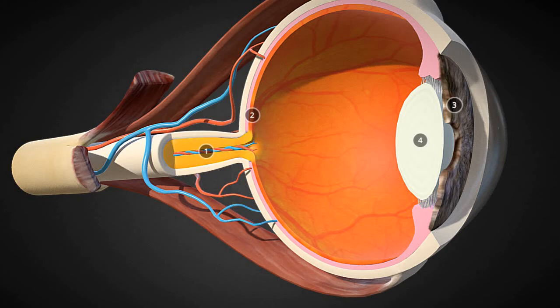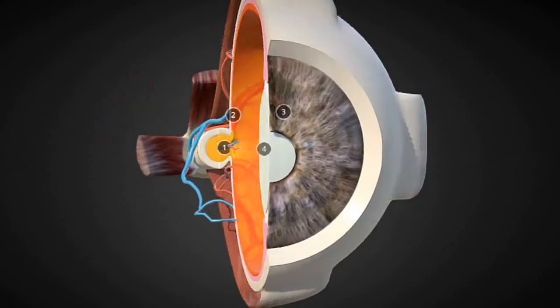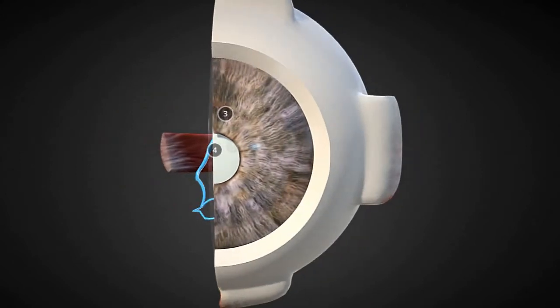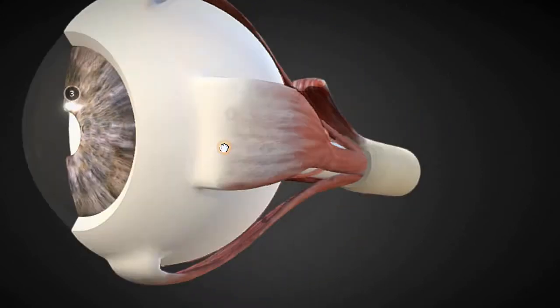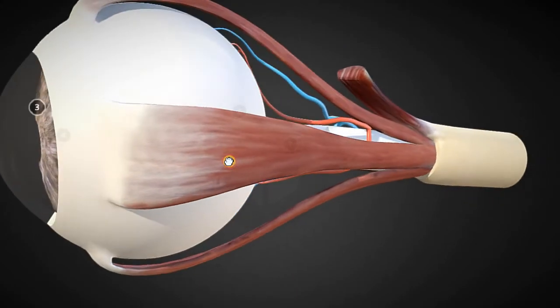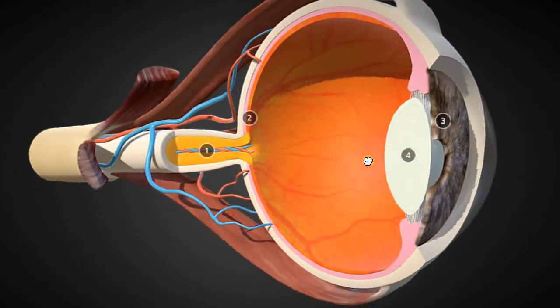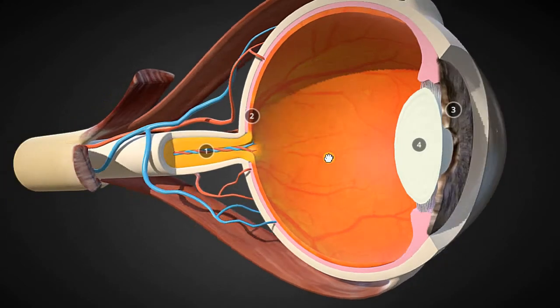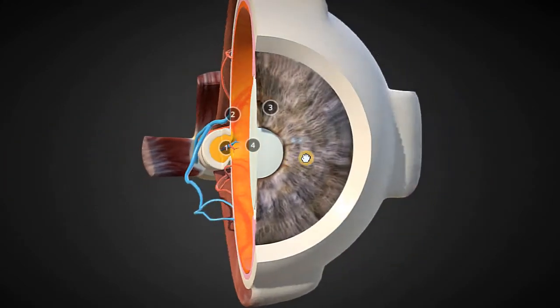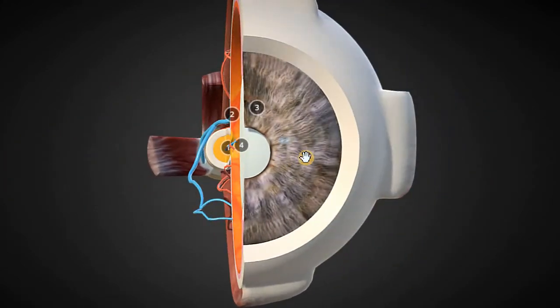Let's take a look at some of the anatomy parts of the eye. Here's an anterior view, this would be a lateral view, and here's a medial view. As you can tell, the eye has been cut in the sagittal plane.